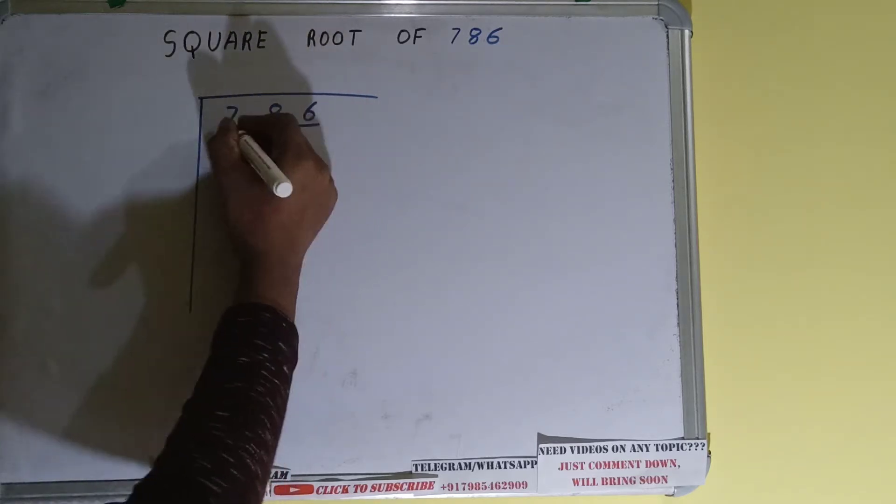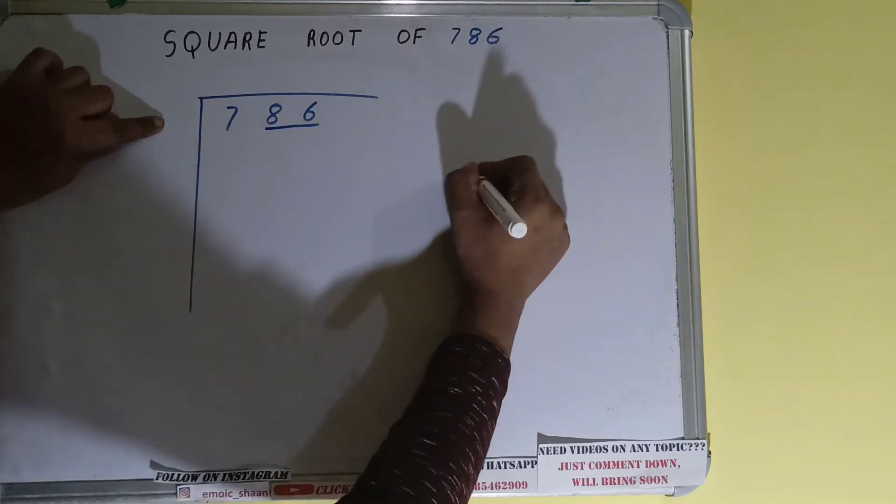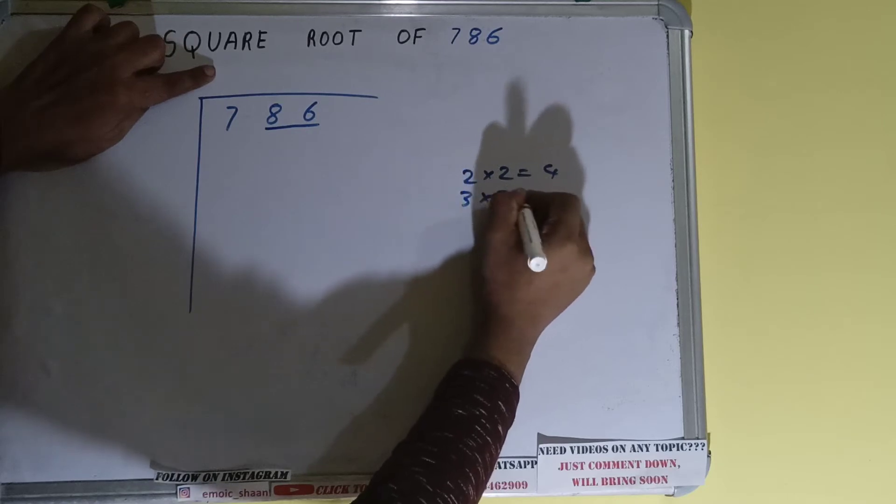So only one pair can be formed and this 7 will be left out. So first we'll divide this 7 and then we'll bring down the pair. The rule is whatever number we write here we have to write here also. So if we write 2 here and 2 here it will be 4. If we write 3 and 3 here it will be 9.